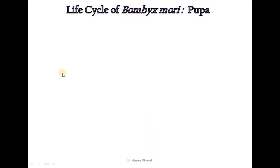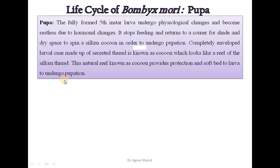The next stage in the life cycle of Bombyx mori is pupa. The fully formed 5th instar larva undergoes physiological changes and becomes restless due to hormonal changes. It stops feeding and retreats to a corner in a shed and dry space to spin a silken cocoon in order to undergo pupation. The completely enveloped larval case made up of secreted thread is known as a cocoon, which looks like a reel of silken thread.